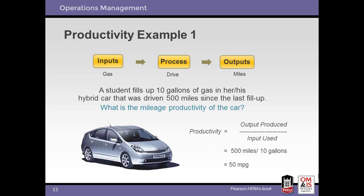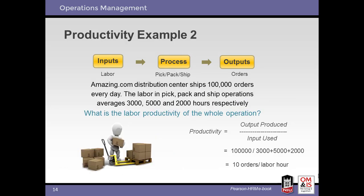Here's an example of productivity measured as the volume of fuel required to drive a fixed distance. Here's a more complex example where the labor required by three separate processes is combined and then compared with the number of units produced. Productivity can be defined in a number of different ways depending upon the process and the metrics available.